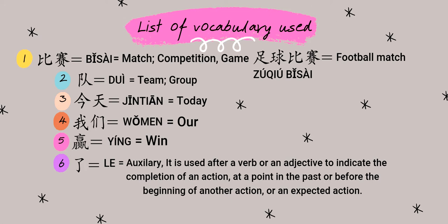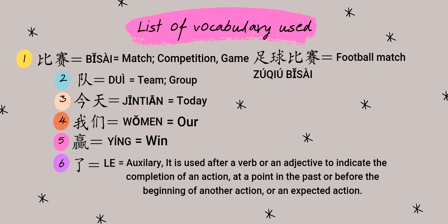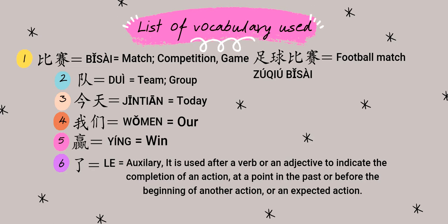If you are mentioning a specific game, you need to mention the name of the game. For example, if you want to say 'football match,' you can say 足球比赛 (zúqiú bǐsài). The word 队 (duì) means 'team' or 'group.'